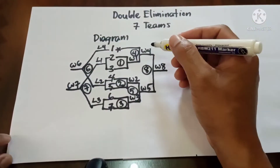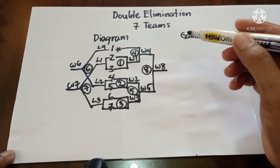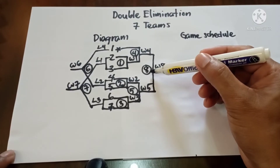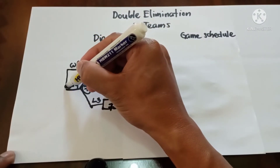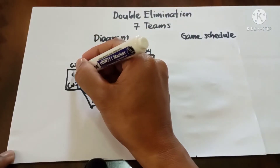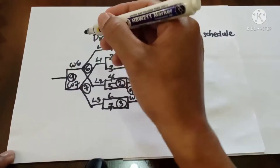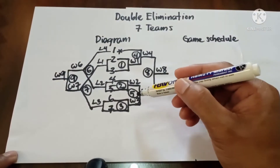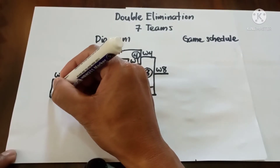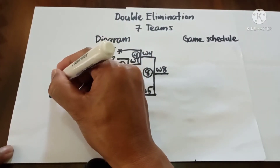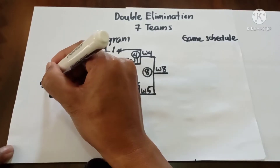Back to the loser's bracket — we have two concerns from the winner's bracket: Loser 5 and the loser of Game 8. Winner 6 versus Winner 7 is Game 9, giving us Winner 9. Then Loser 5 plays against Winner 9 in Game 10, giving us Winner 10.